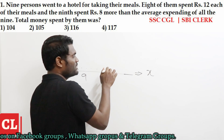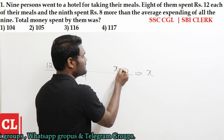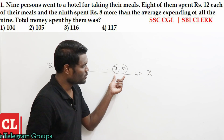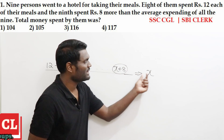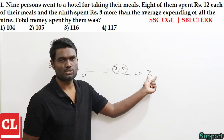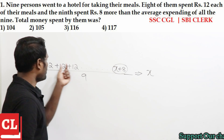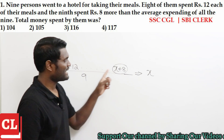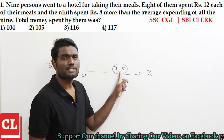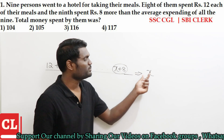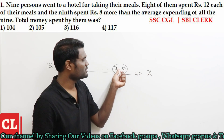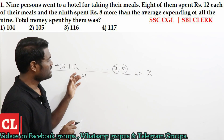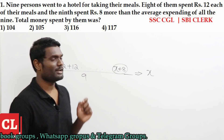If the average of all 9 persons is X, the 9th person should spend X plus 8 rupees — because the question says the 9th person is spending 8 rupees more than the average of all 9 persons. All the other persons are having ₹12 each, but the 9th person should spend 8 rupees more than the actual average X. If I solve this equation, I'll come to know the value of X.